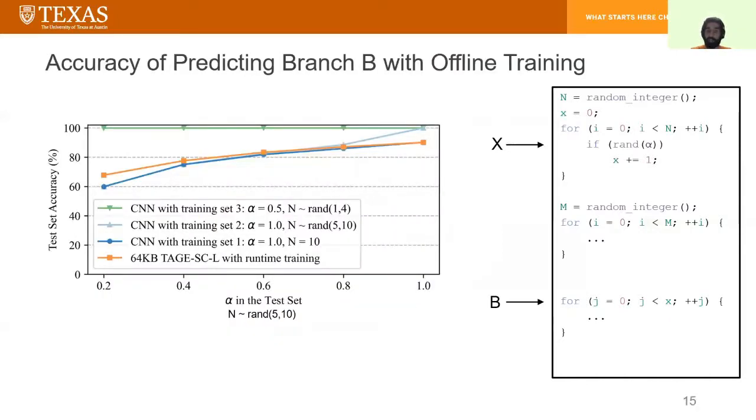Thus far, I've been talking about the prediction capabilities of CNNs in abstract, but can they actually be used in practice with offline training to learn these input-independent behaviors? Let's keep using our example to showcase the offline training. So for my offline training experiments, I have defined two user-given inputs. The first one is N, which determines the range of number of iterations of the first loop. And the second input is alpha, which determines how often variable X is incremented within the first loop.